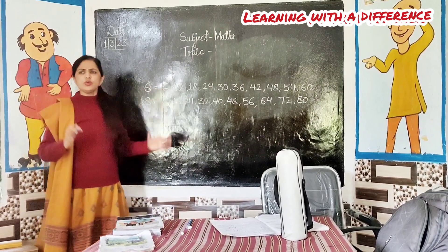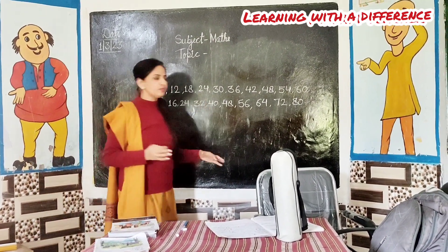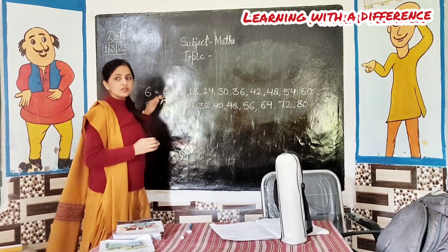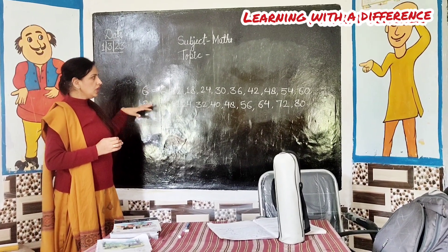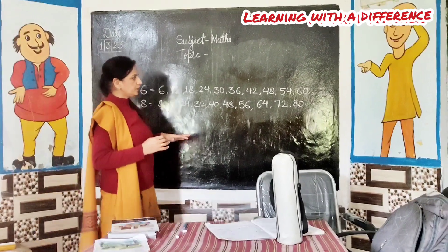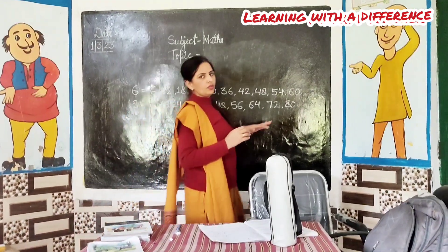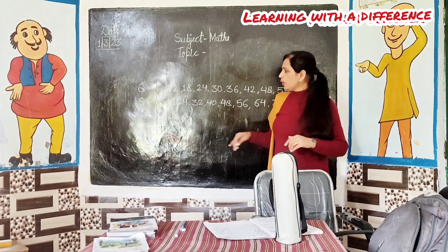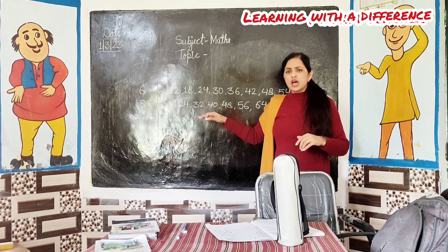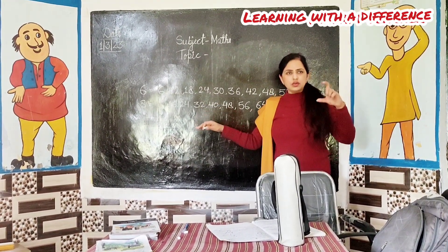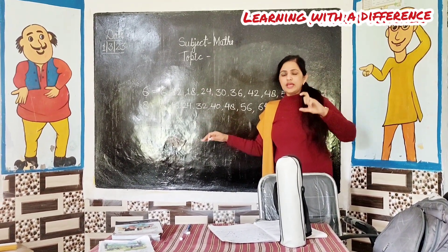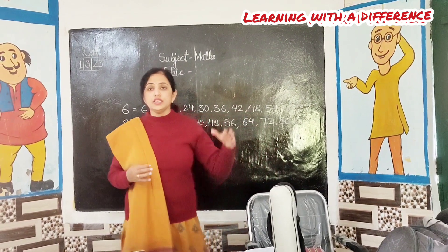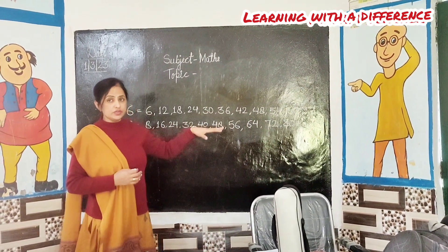Everybody look at the blackboard. Tables of 6 and 8 are here. Now see. You all know the tables of 6 and 8. Okay. What numbers are common? Common — that means same. So, what are the common numbers?